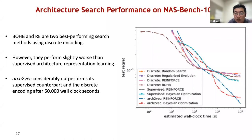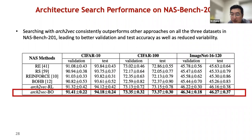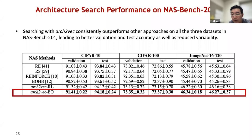This table shows the mean and standard deviation of validation and test accuracy calculated over 500 independent runs under three datasets in NAS-Bench-201. Overall, searching with ARC2WAC consistently outperforms other approaches on all three datasets — CIFAR-10, CIFAR-100, and ImageNet — included in NAS-Bench-201. We also find that ARC2WAC leads to better validation and test accuracy as well as reduced variability.